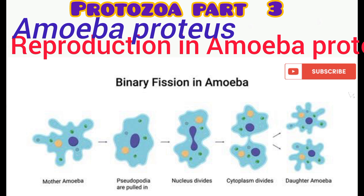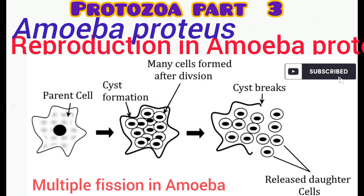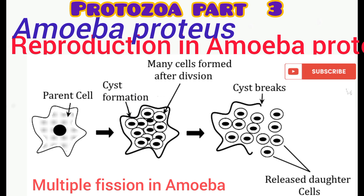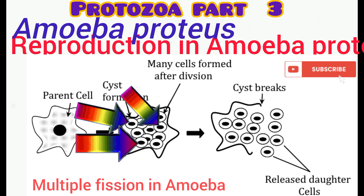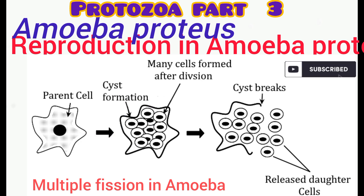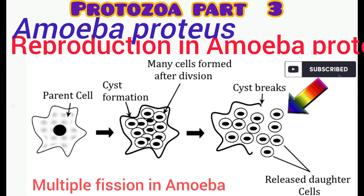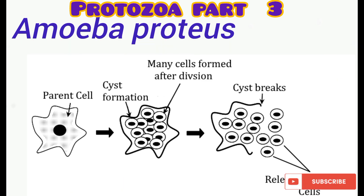Under unfavourable conditions, multiple fission is used. The parent amoeba undergoes cyst formation, where a protective covering forms around the organism. After forming the cyst, the nucleus undergoes repeated division to form numerous nuclei, while the cytoplasm also divides, forming numerous daughter cells inside the cyst. When conditions become favourable, the cyst bursts open to release the cells, which develop into independent amoeba — a method of surviving unfavourable conditions.